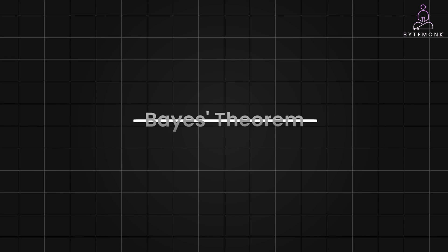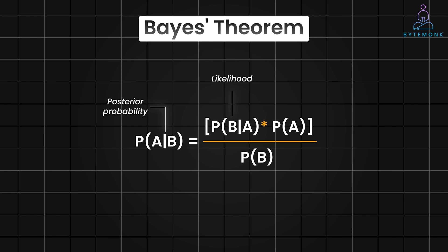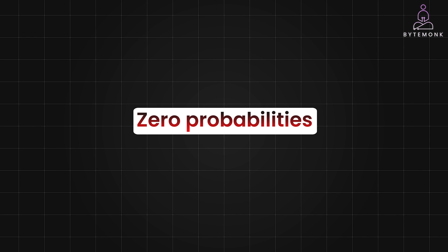Previously, we have learned Bayes' theorem is a powerful tool for calculating conditional probabilities. But it relies on accurate estimates of prior probabilities. When you have a large amount of data, these estimates are reliable. However, with limited data, you might encounter situations where you haven't observed certain events at all. This leads to zero probabilities.